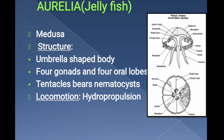Aurelia, also known as jellyfish, is the large version of the medusa of Obelia. It is free-floating and has an umbrella-shaped body with four gonads on its upper surface and four oral lobes hanging downwards from the lower surface. Its body is transparent with numerous tentacles in the peripheral part, and these tentacles bear nematocytes.